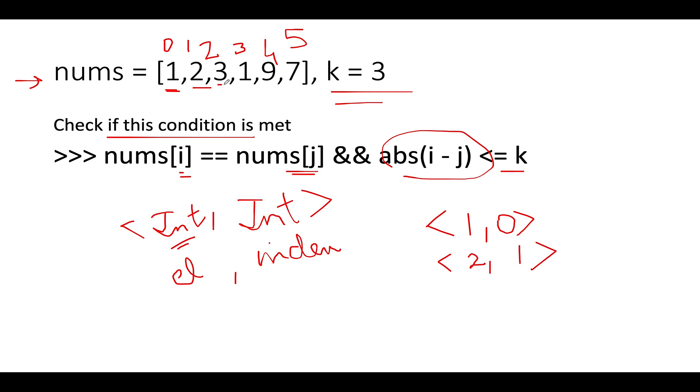Is 3 part of our map? No, it's not. 3 gets inserted at 2nd index. The next element that we see happens to be 1. So we will check whether 1 is part of the map or not. Yes, it is part of the map. At what index does it occur? It occurs at the 0th index.